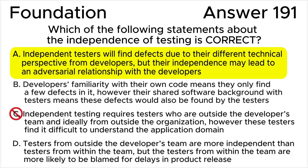Answer C is incorrect. Testing can be conducted at different levels of independence, ranging from no independence for the author to very high independence for testers from outside the organization. In most projects, multiple levels of independence are utilized, with developers performing component and component integration testing, the test team performing system and system integration testing, and business representatives performing acceptance testing. So testers can be in the developer's team and do not need to come from outside the organization. Knowledge of the application domain varies case to case and is not dependent on the level of independence.